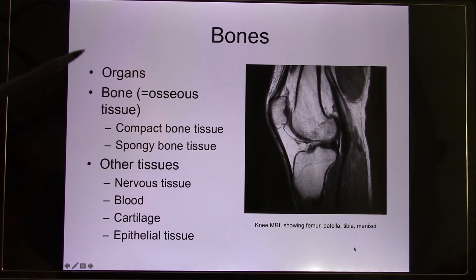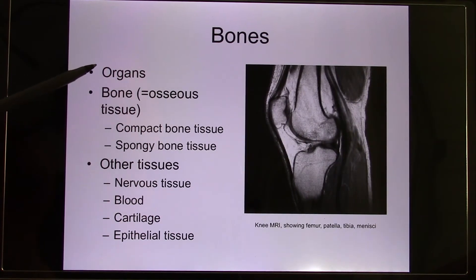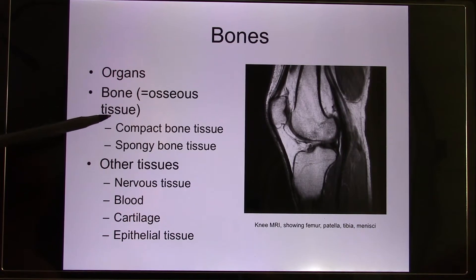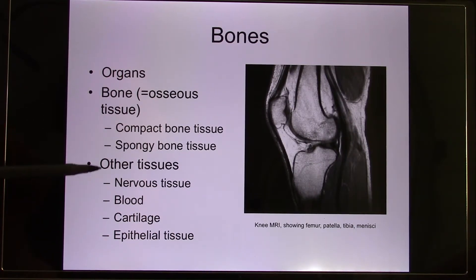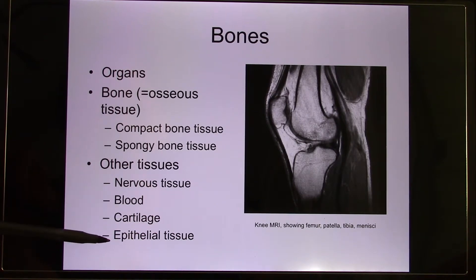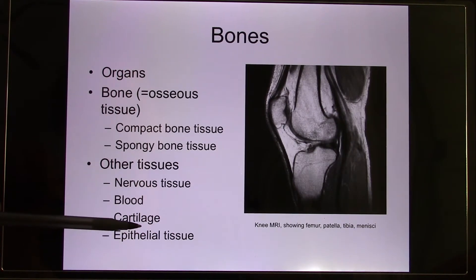Bone is an organ because you have more than one kind of tissue together. The bone tissues include compact bone and spongy bone. Inside the bone you also have the nervous tissue and blood vessels — so if you break your bone, you bleed a lot. It also has cartilage and epithelium tissue covering the bones, on the outside and the inside.